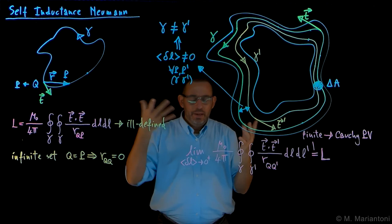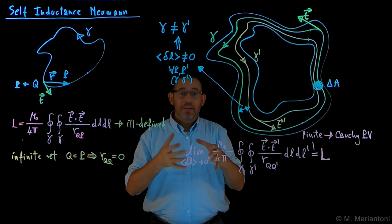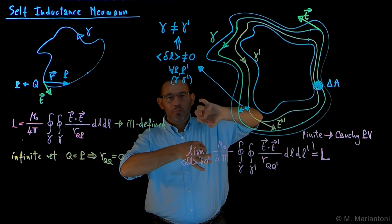In other words, if I have a structure like a loop like this, to find the self-inductance, I need to consider two loops and then, in the limit, make them coincide. In other words, I'm calculating the mutual inductance between, effectively, two distinguished loops.